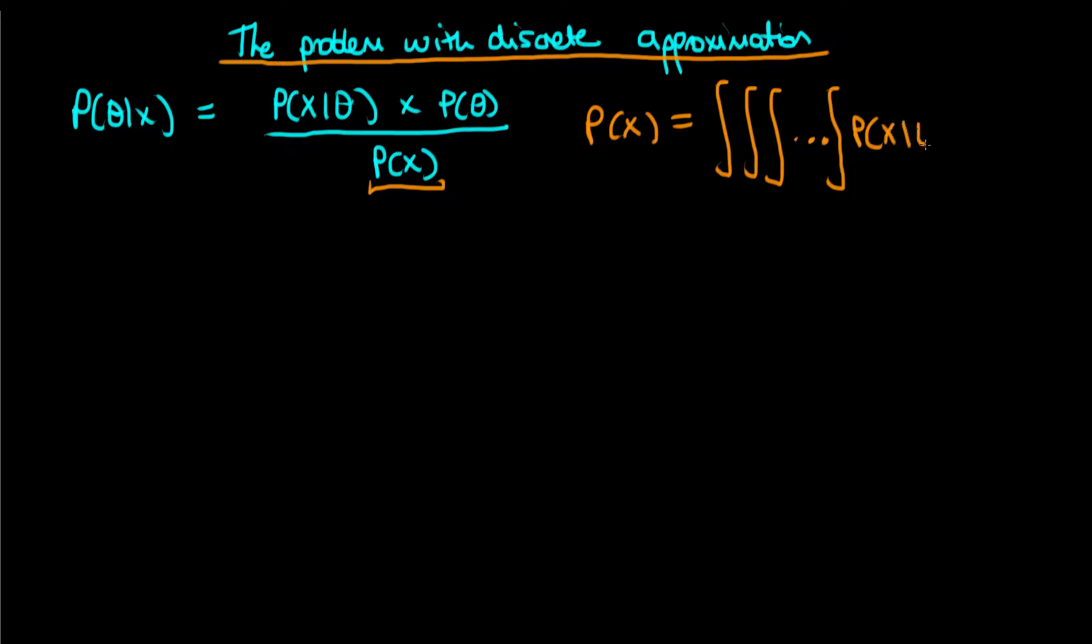So that's p of x given theta times p of theta. And we're integrating here with respect to parameter theta 1, theta 2, etc., all the way up to the last parameter we have in our model theta k. And we said that exactly working out this multidimensional integral is impossible. There are no analytic results in general for doing such an integration and so we need to use approximate methods to do so.